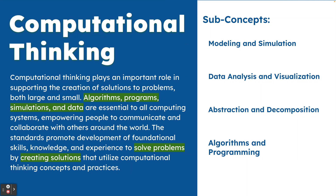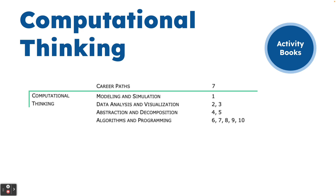The next concept area is computational thinking, built into four sub-concept areas: modeling and simulation, data analysis and visualization, abstraction and decomposition, and algorithms and programming. The main focus is building that same vocabulary from K-12 — understanding what it is to make an algorithm, do simulations, analyze data, and think about problem solving and creating solutions. Computational thinking has 10 standards, the largest concept area, and the link to the activity books can be found on this page.